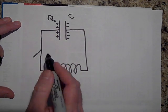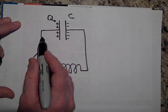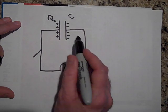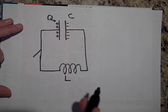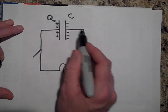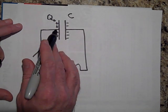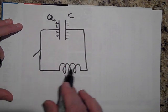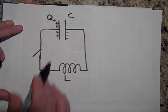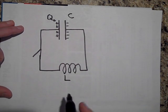If I close this switch, I want you to see what happens here. When I close this switch, these charges rush around to negate the negatives on the other side. I know that it's actually the electrons that go this way, but I'm going to use the conventional flow of current.